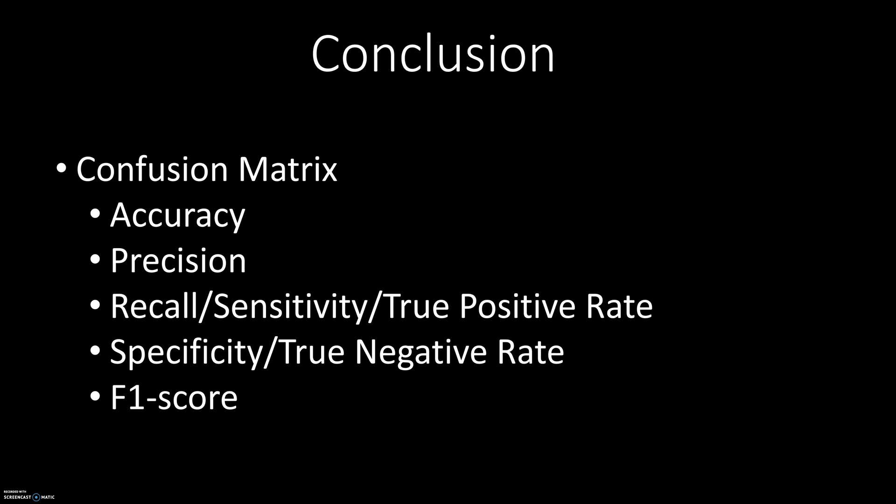Those are all the metrics typically used for binary classification problems: the confusion matrix, accuracy, precision, recall, specificity, and the F1 score. The fundamental question is: which metric should we use? The answer depends on the problem you're trying to solve. If you have imbalanced data, accuracy is not a good measure, as we saw in this example. You really want to analyze all the metrics and, based on the distribution of your dataset, decide which one best measures the model you're building. That's all for this video — I hope it was helpful. If you're finding the videos on this channel useful, please consider subscribing. Thank you and I'll see you in the next one.